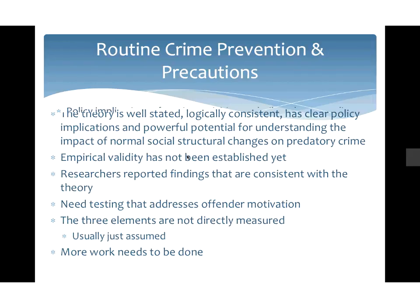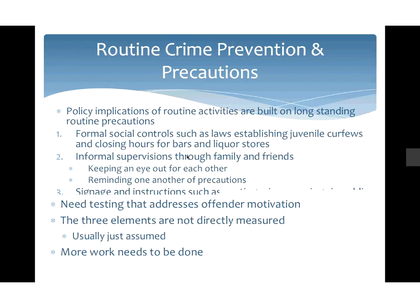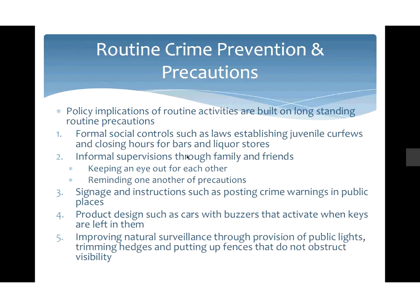When thinking about routine crime prevention, policy implications of routine activity theories are built on long-standing practices: curfews, closing hours for bars and liquor stores, staggering closing times so not everyone pours into the street at once, stopping alcohol service at concerts and sporting events before they end. We keep an eye out for each other — reminding friends to text when they get home safely. Signs in public places, product designs like a car that dings if you leave keys in it. We can also improve natural surveillance through public lighting, trimming hedges, and putting up fences that don't totally obstruct visibility.